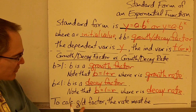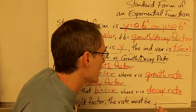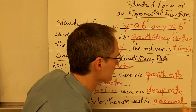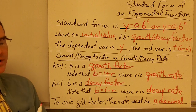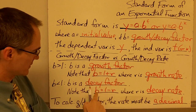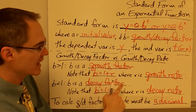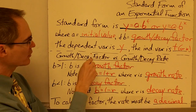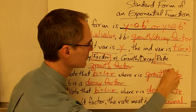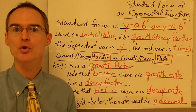To calculate the growth or decay factor, the rate must be expressed as a decimal. We'll look at examples using these relationships between the growth factor and growth rate, or the decay factor and decay rate. For now, just be aware that there is a difference between a growth or decay factor and a growth or decay rate — those are two different things.